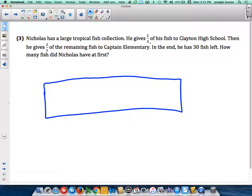He gives two-thirds of the fish to Clayton High School. So we need to divide the bar into thirds. We can do that by drawing two lines and we have thirds.